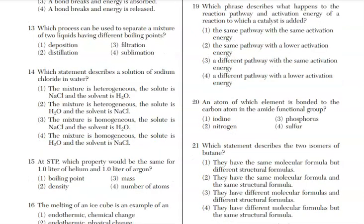For 19, we have which phrase describe what happens to the reaction pathway and activation energy of reaction to which a catalyst is added. Well, it's going to be a different pathway and it lowers the activation energy. And if you remember potential energy diagram, that means the middle of that diagram, it drops. So different pathway, lower activation energy.